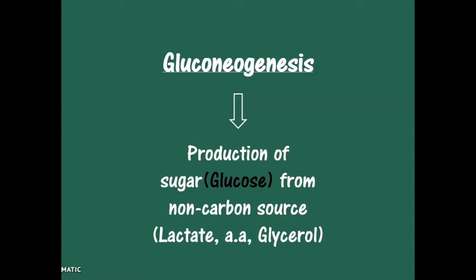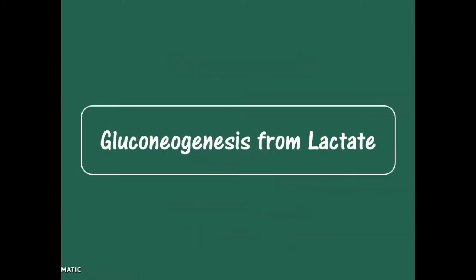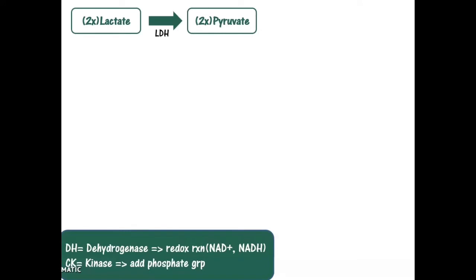Let's now talk about gluconeogenesis from lactate. First of all, there are two lactate molecules that should be converted into two pyruvate by the enzyme LDH, the lactate dehydrogenase. Keep in mind that this step is reversible, which means pyruvate could be converted into lactate, and lactate could be converted into pyruvate, by the same enzyme lactate dehydrogenase.